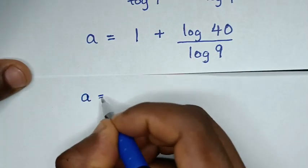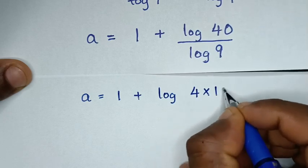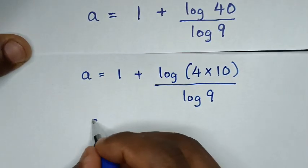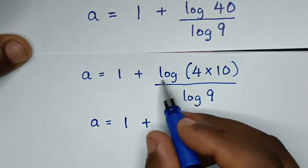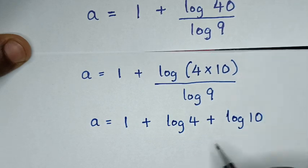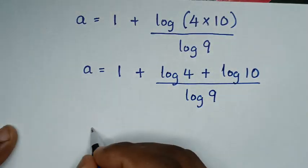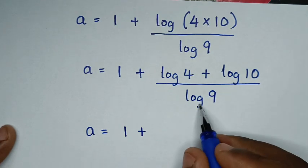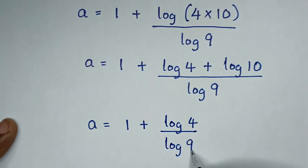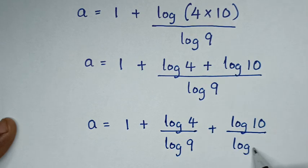Then in the next step, a is equal to 1 plus log of 40, and 40 is same as 4 times 10. Applying the product rule: log of 4 plus log of 10, over log of 9. Dividing through by log of 9: log of 4 over log of 9 plus log of 10 over log of 9.